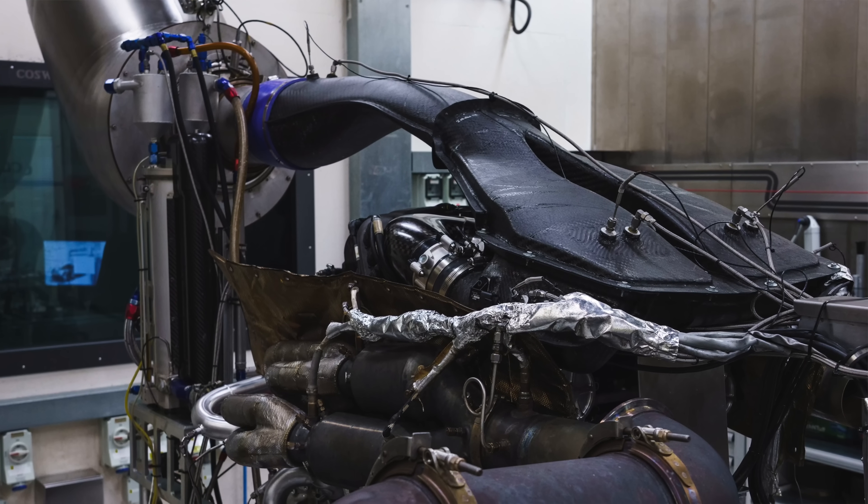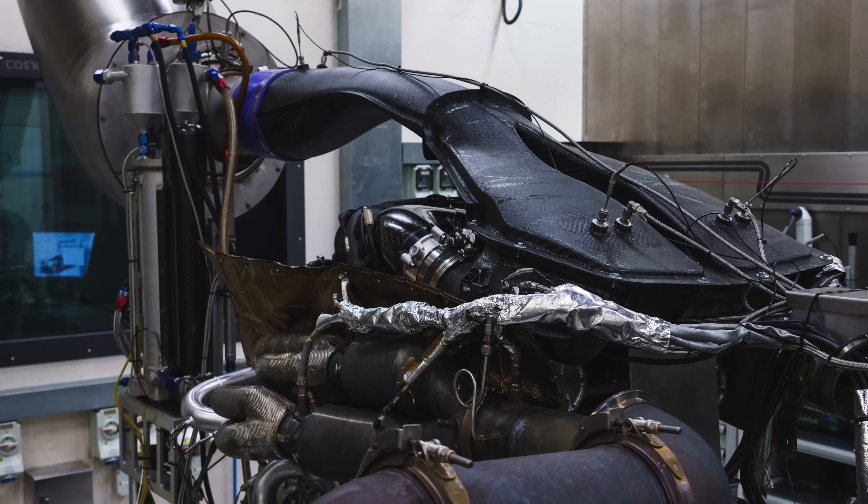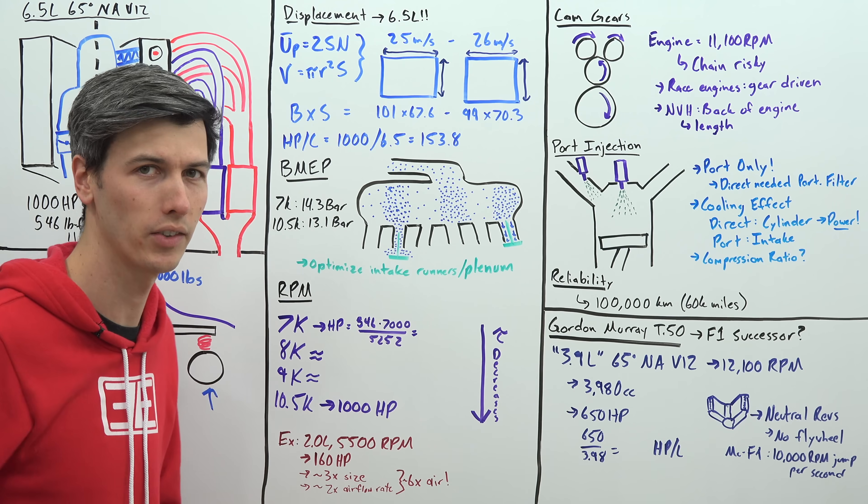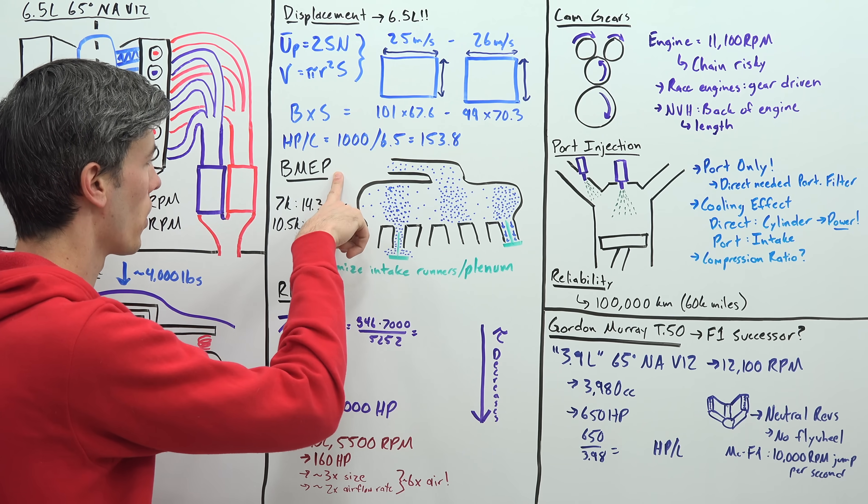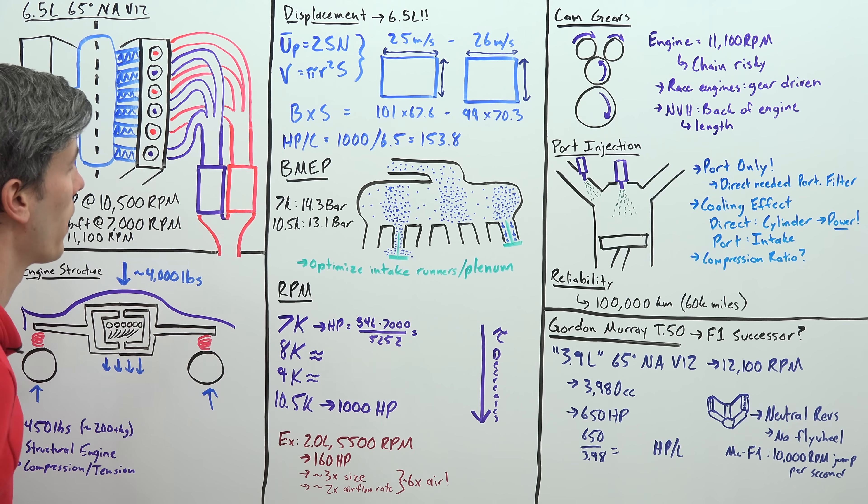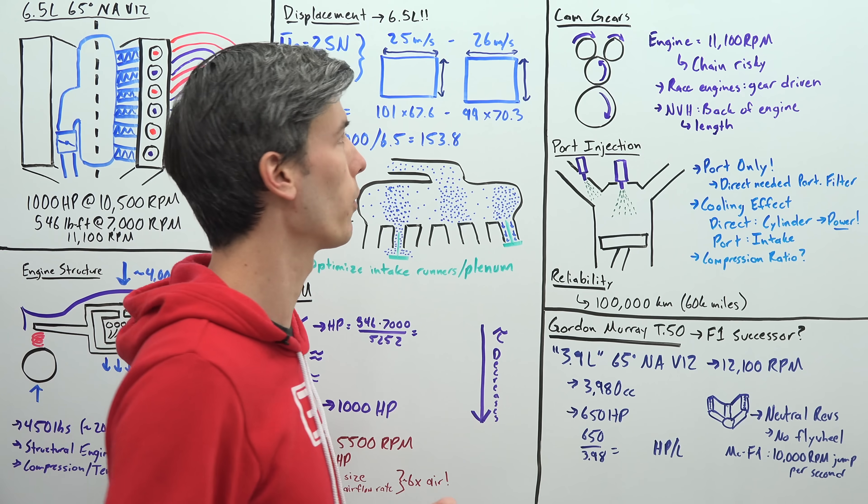Now as far as how this engine actually creates a thousand horsepower there's three things I want to focus on. First being displacement, size of course does matter for engines. Second I'm going to talk about brake mean effective pressure and then third we're going to talk about rpm, the higher you can get that engine to rev the more power you can make.